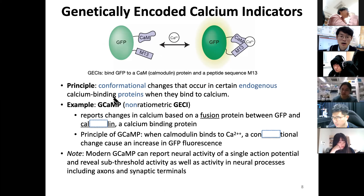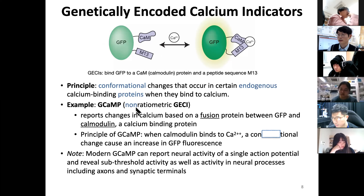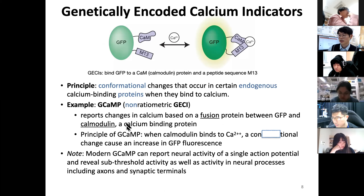The name GCaMP comes from GFP-G, and CAM comes from calmodulin, which is an endogenous calcium-binding protein. We have a fusion protein of GFP and calmodulin. There is also R-CAMP using red fluorescence. The principle is: when calmodulin binds to calcium ions, a conformational change causes an increase in GFP fluorescence.